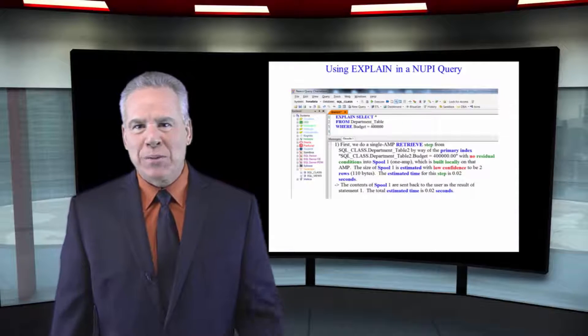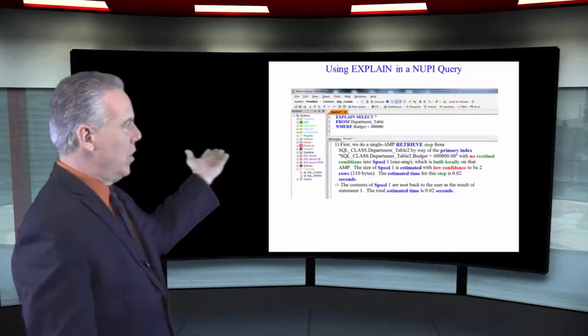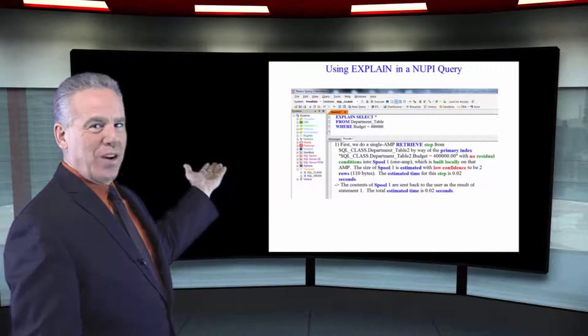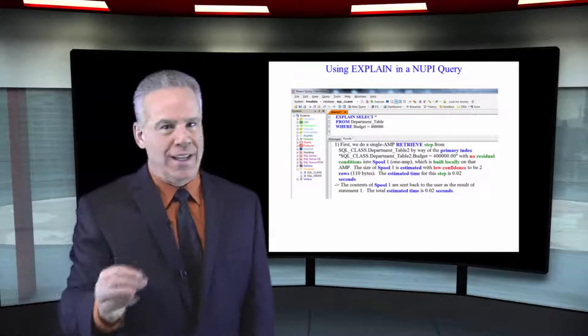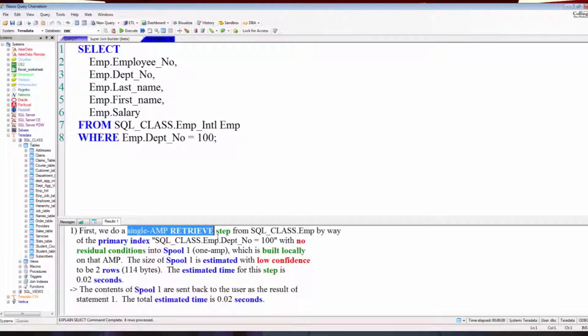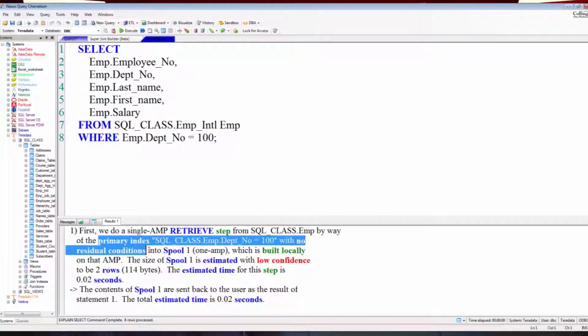We've just done an explain using our non-unique primary index in the WHERE clause. And what's that explain say? Single AMP retrieve by way of a primary index. That's really the key.